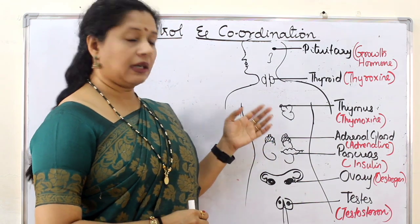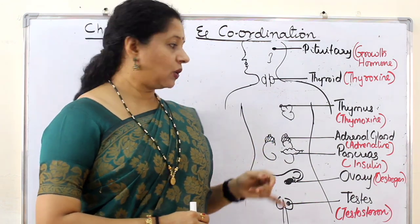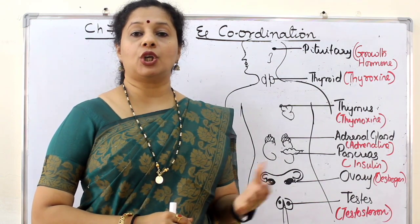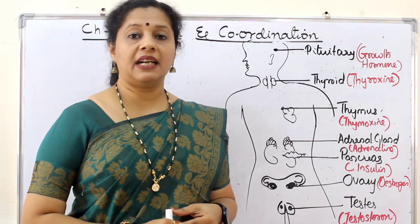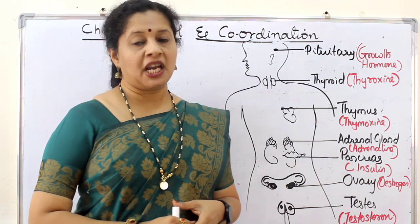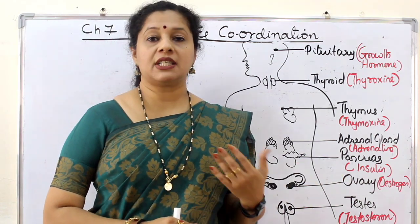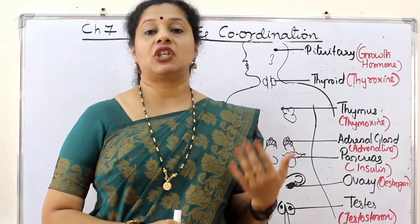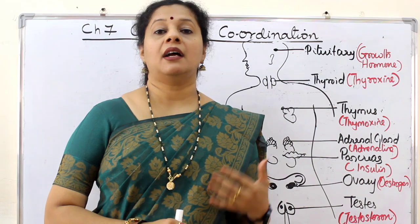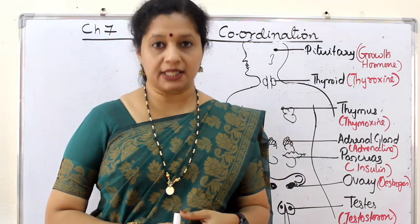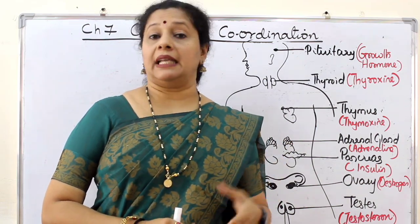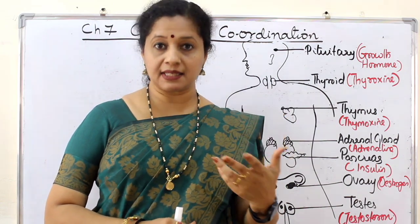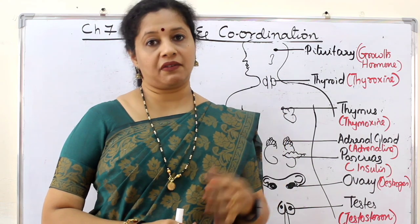Starting in the NCERT textbook order, we begin with the adrenal glands, which are present on top of the kidneys. Adrenal glands secrete a hormone called adrenaline. Adrenaline is otherwise called the flight or fight hormone because it helps us prepare to deal with an emergency situation. In any emergency, we have two choices: we can fight back or we can run away from the situation.